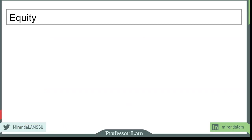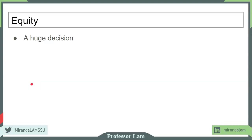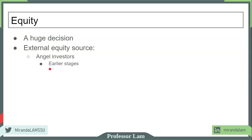Another form of financing is equity. Equity may be less risky in one sense — you don't have to pay interest and you're not likely to go bankrupt — but it comes with its own costs. Equity financing for an entrepreneur typically means bringing on a new partner or seeking external equity from someone else, which is a huge decision because you are sharing your business. Angel investors typically invest in early stages and may be willing to be minority owners, taking 5% or 10% of a business, meaning the entrepreneur remains a majority owner and maintains significant control.